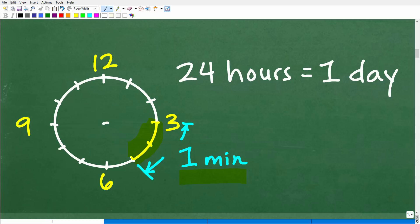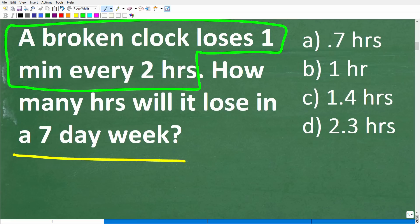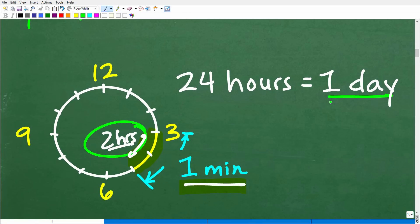Now, I'm thinking to myself, this is two hours. So in two hours, this clock is going to lose one minute. Now, is this really helping me solve the problem? Well, it might help you identify, I got two hours, and I need to think about this clock in terms of a day, because the question is saying how many hours will it lose in a seven-day week? So I need to figure out how much time, how many minutes or hours this clock is going to lose in one day.